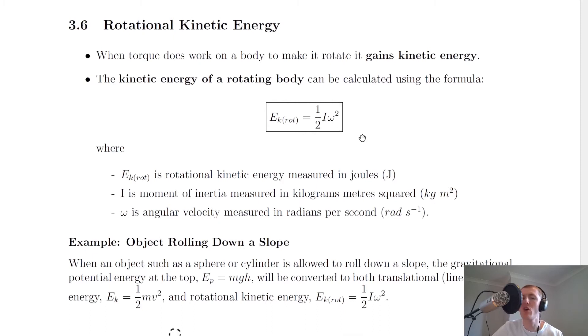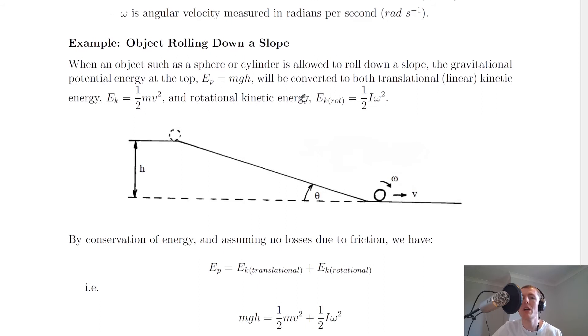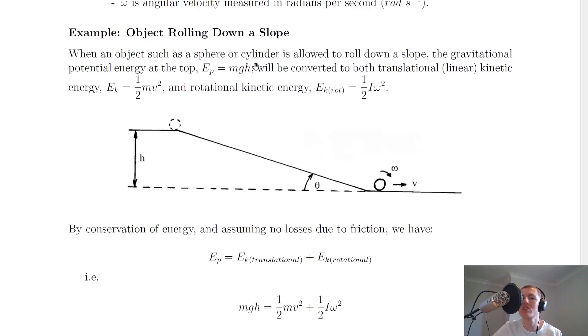Now to put this into context in an example, we're going to look at the specific case for an object rolling down a slope. So it says here that when an object such as a sphere or cylinder is allowed to roll down a slope, the gravitational potential energy at the top, which is given by EP = mgh...